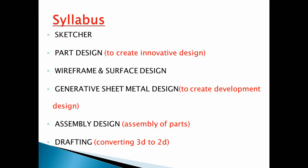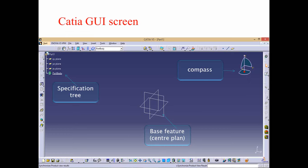Surface design is a very complicated topic, that is why we use the surface module. That is the Generative Sheet Metal Design for sheet development. Then we have Assemblies. We start to see the GUI — the Graphical User Interface screen — with the specification tree on the side.